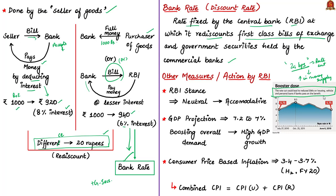The Reserve Bank of India has also changed the stance of its policy from neutral to accommodative, which means a hike in interest rates is ruled out in the future. If the stance is neutral, RBI gives an indication that it can either increase or decrease interest rates. But if the RBI stance is accommodative, it means it will not hike the interest rate at least in the next policy meeting.